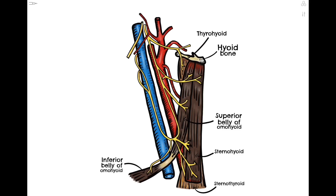Last but not least we have our sternothyroid muscle, which is wider than the sternohyoid and lies directly underneath it. This is the only infrahyoid muscle that actually doesn't attach to the hyoid bone — instead it attaches to the thyroid cartilage and the sternum. All of the strap muscles we've covered play a role in depressing the hyoid and the floor of the mouth and raising the larynx while swallowing. The reason we've taken a while to look at each of these is because all of them are innervated by the Ansa Cervicalis via its different branches.